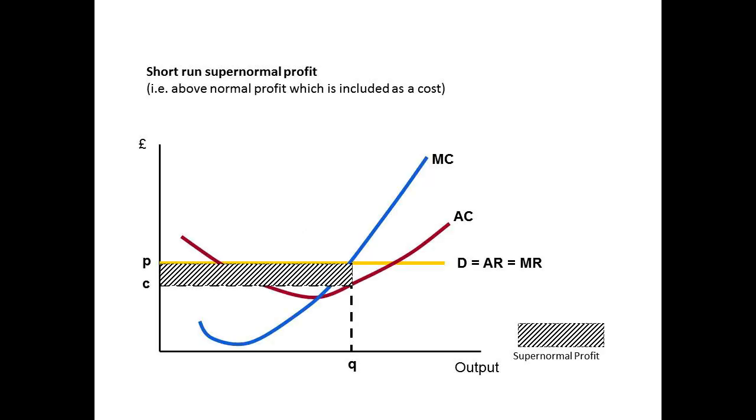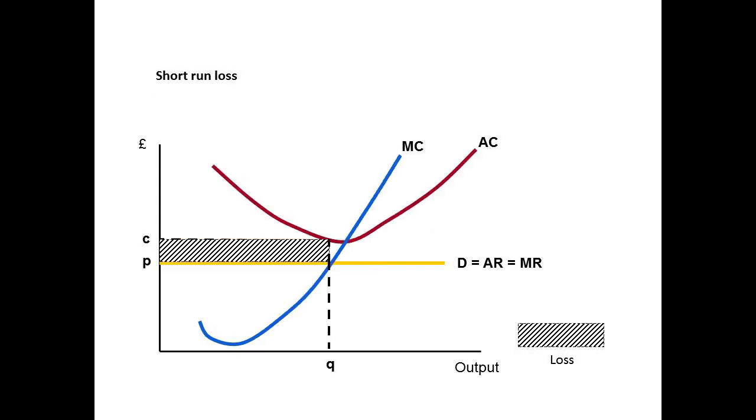We've seen previously that in the short run, a perfectly competitive firm can make a supernormal profit, as shown by this diagram here, or it can make a loss, as shown by this diagram here. What we'll see in this video is that in the long run, neither of these two options are possible.